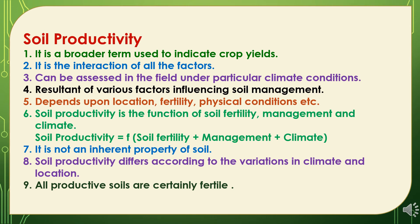Some facts about soil productivity: it is a broader term used to indicate crop yields; it is the interaction of all factors related to crop production; it can be assessed in the field under particular climatic conditions; it is the resultant of various factors influencing soil management; it depends upon location, fertility, physical conditions, etc. Soil productivity is a function of soil fertility, management and climate — it can be expressed as a summation of soil fertility plus management practices and climatic factors. Soil productivity is not an inherent property of soil; it differs according to variations in climate and location; and all productive soils are certainly fertile soils.